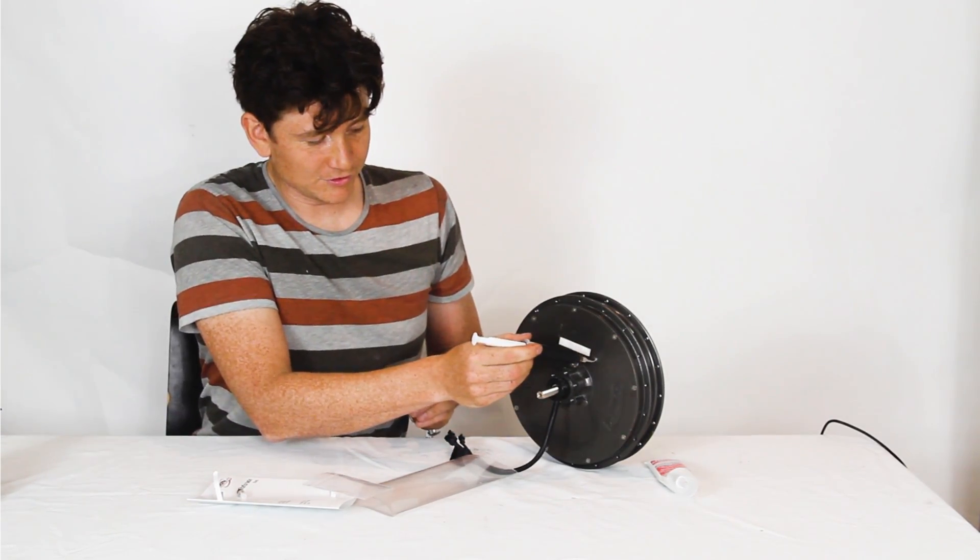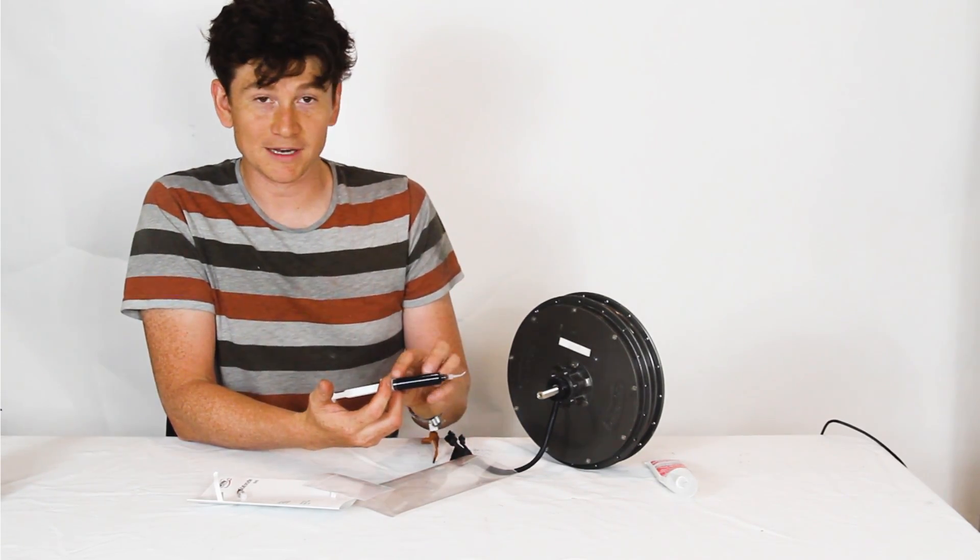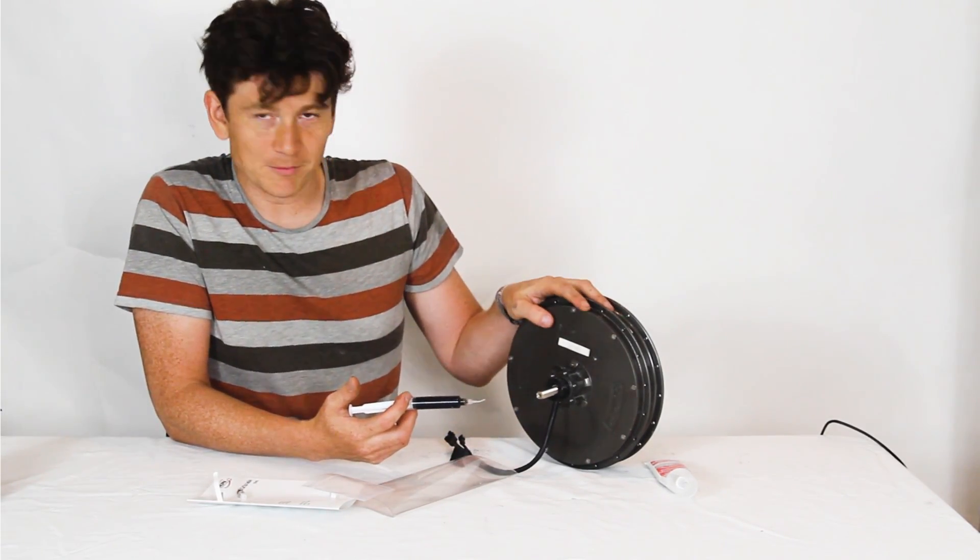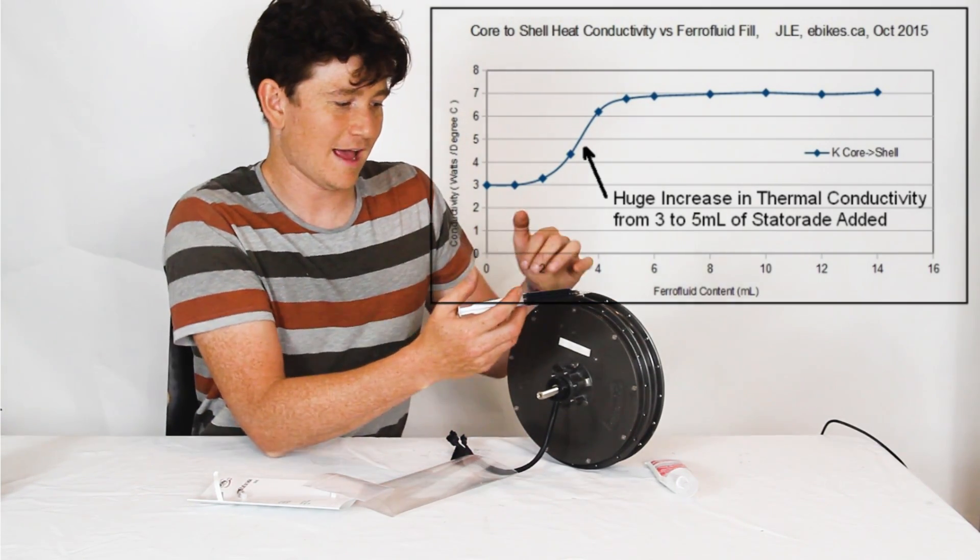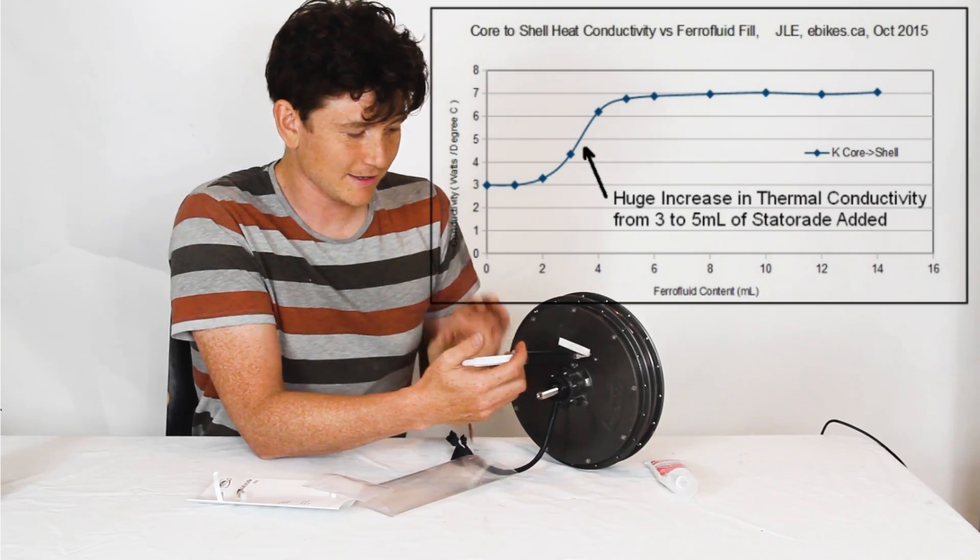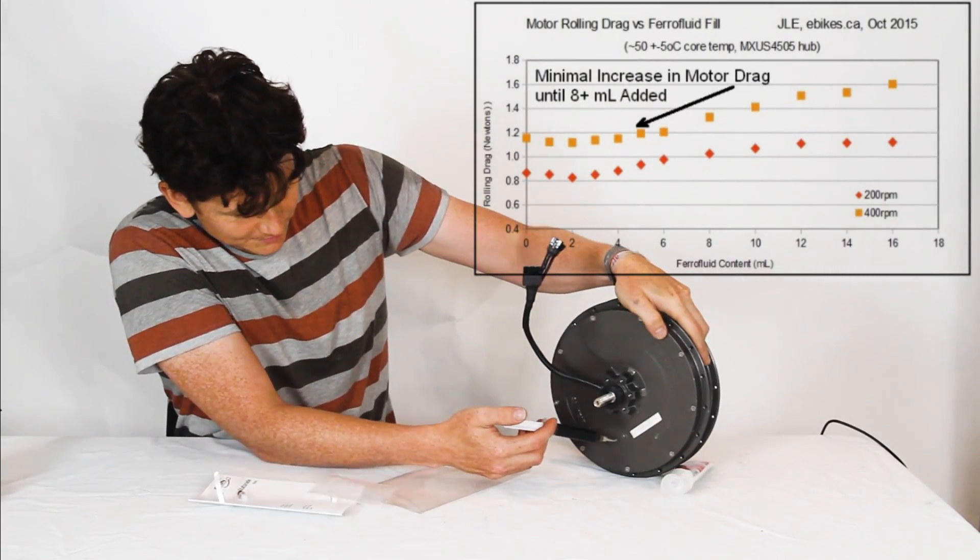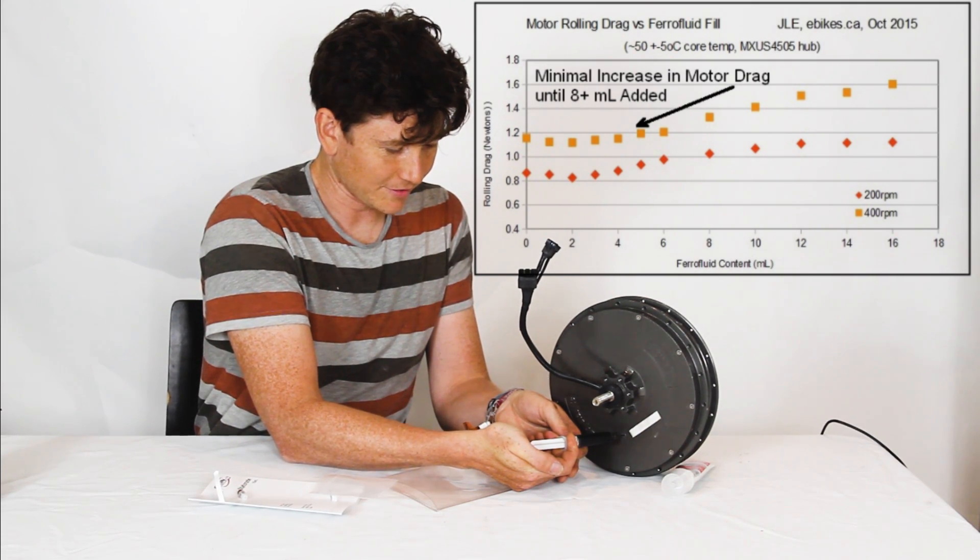And now I'm able to squirt this directly in here. So the syringe is graduated. It's a 10 milliliter syringe. And typically for a motor of this size, you want about 6 milliliters inside the stator in order to have effective thermal coupling but without causing additional motor drag. So I can simply put this into the hole. And then as I'm squirting it, I'm keeping an eye on the graduations.